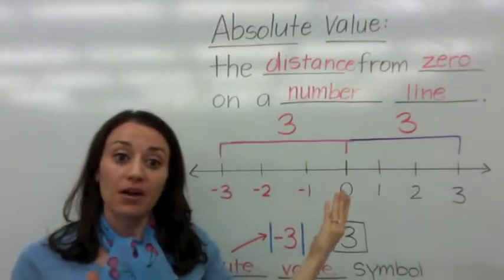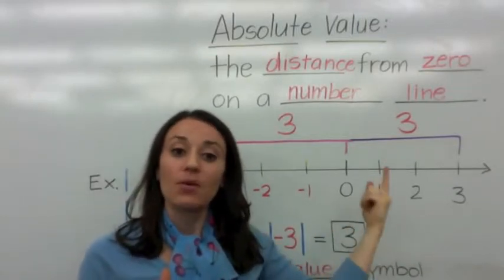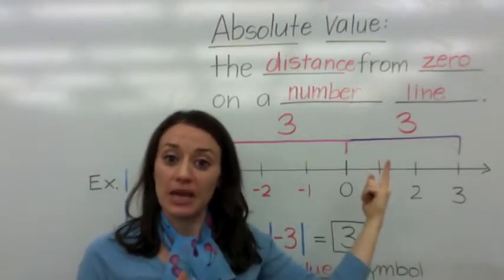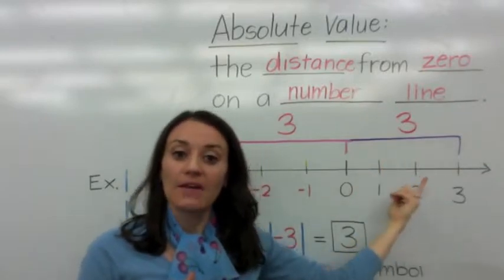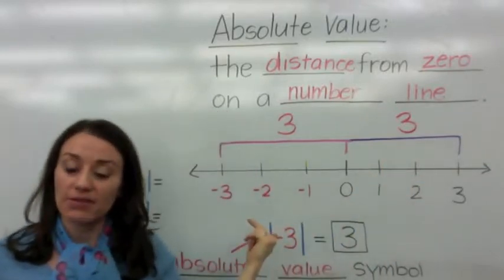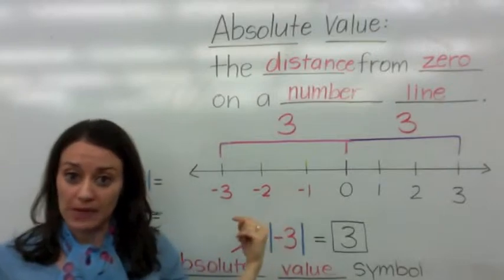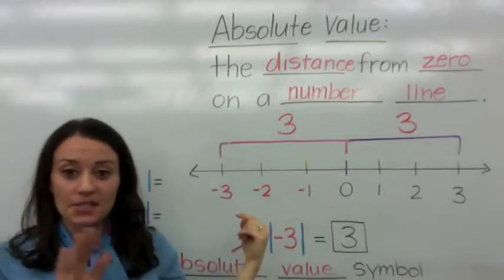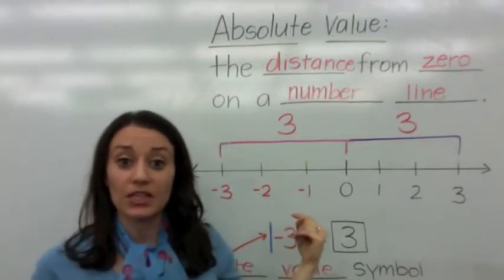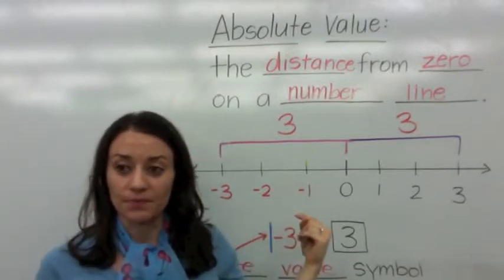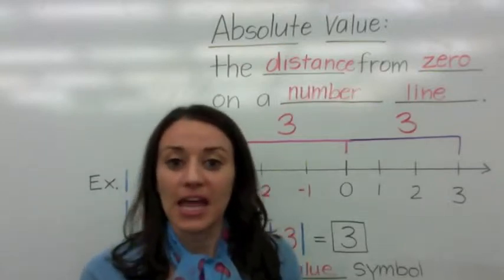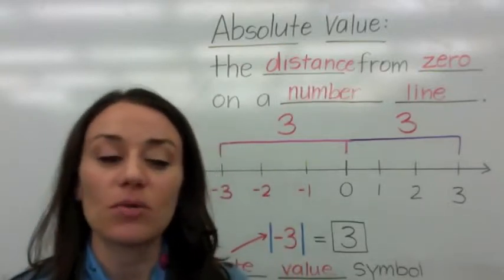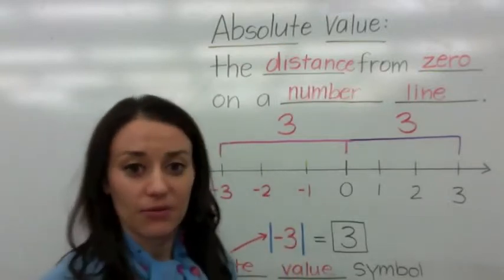If I want to get to three, I would move three spaces — one, two, three. If I want to get to negative three, I would also move three spaces. And it doesn't matter that I move to the left.